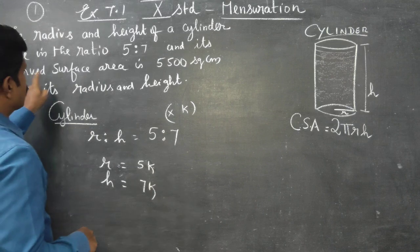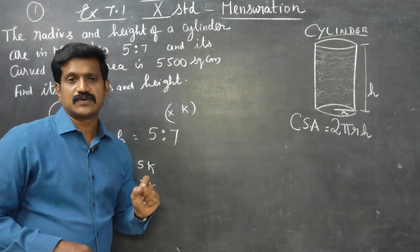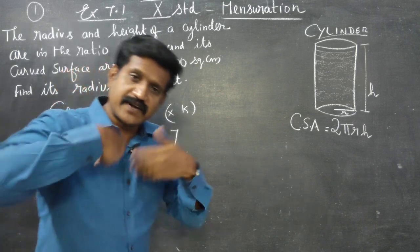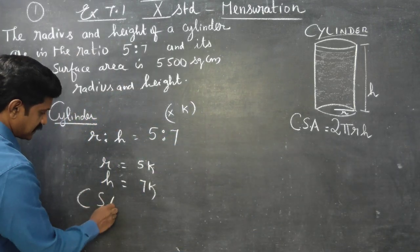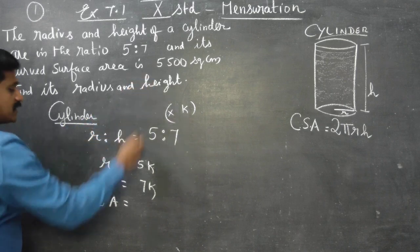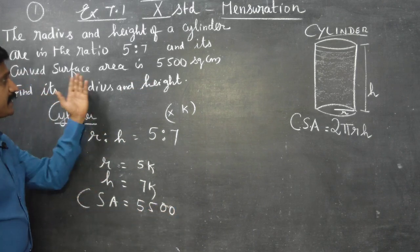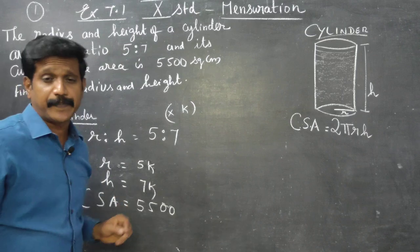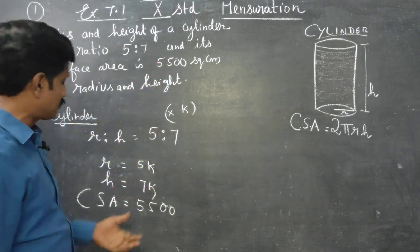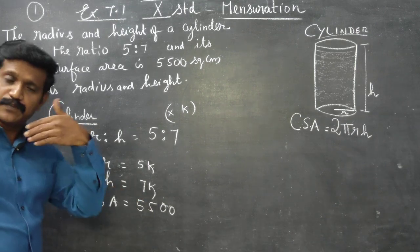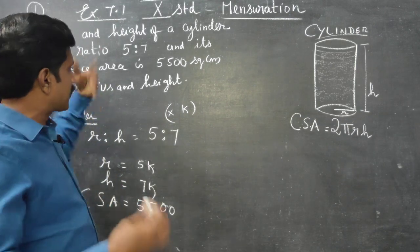The curved surface area (CSA) is given as 5500 square centimeters.